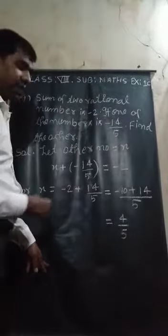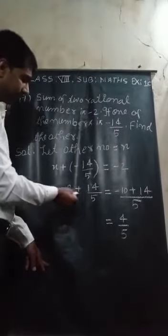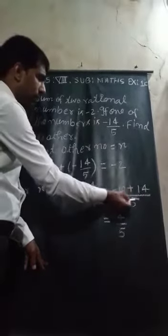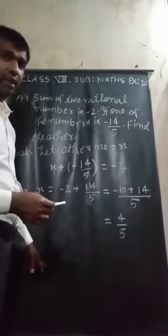Then minus 14 upon 5 will be 14 upon 5 only. So, minus 2 plus 14 upon 5. Then 5 to the 10, minus 10 plus 14 upon 5.